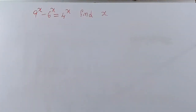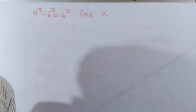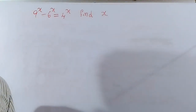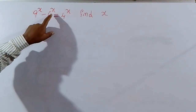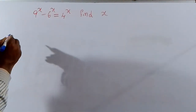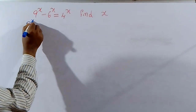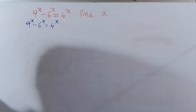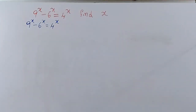Exponents, logarithms, polynomials — all chapters, 2-3 chapters. So, 9 power x minus 6 power x is equal to 4 power x. Find x. 9 power x minus 6 power x equal to 4 power x.